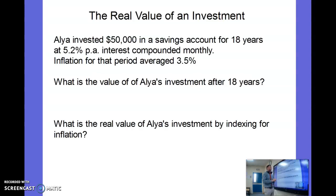Let's look at this example. Alya invested fifty thousand dollars in a savings account for 18 years at 5.2% p.a. - that PA means per annum, per year, annum is Latin for year - and that interest is being compounded monthly. So every month she earns a little bit of interest. The inflation for that period averaged 3.5%.